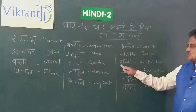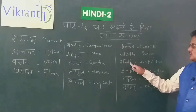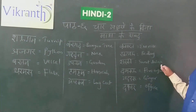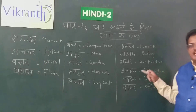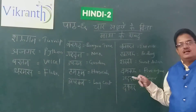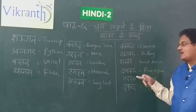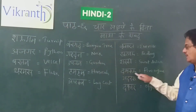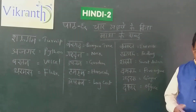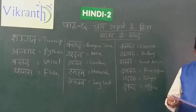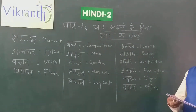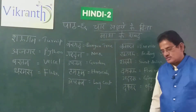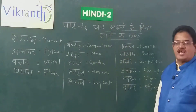Sharbat — Sharbat means a sweet drink. You know, generally lemon water we call Sharbat. Damkal — Damkal means fire engine. When there is a fire accident, the fire engine that comes to put out the fire is called Damkal in Hindi.